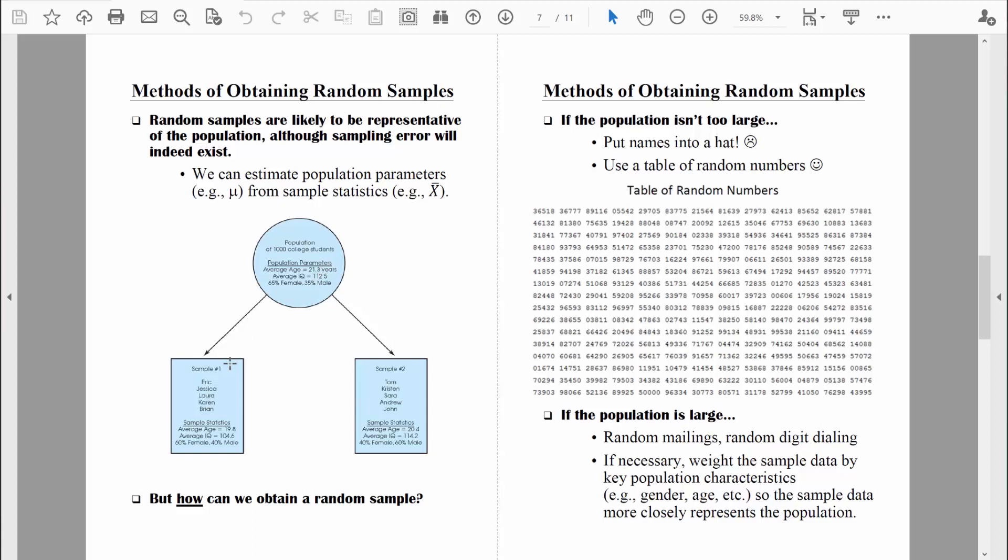So our sample statistics aren't going to be perfect, but sampling will provide us with a method of learning about populations without measuring the entire population. For right now, what I really want to do is talk about how can we obtain a random sample.